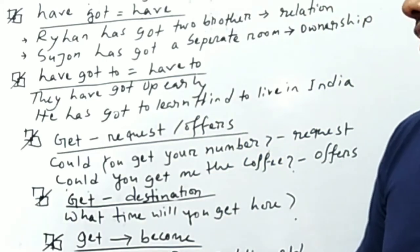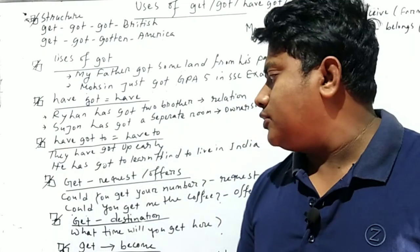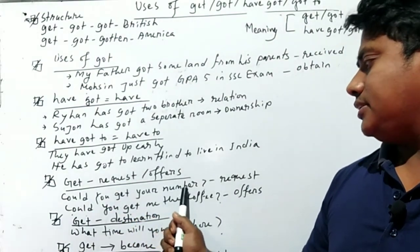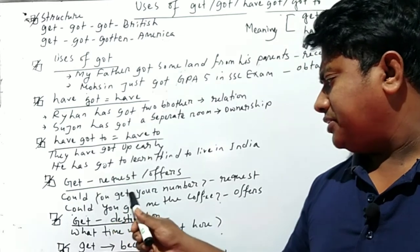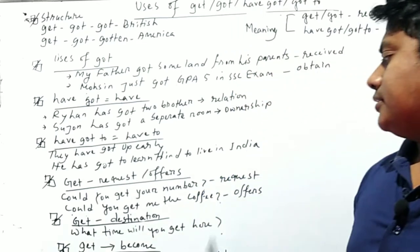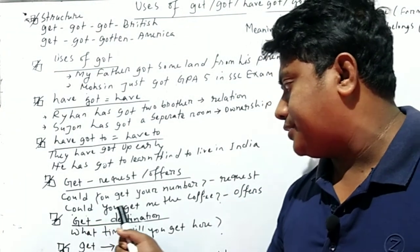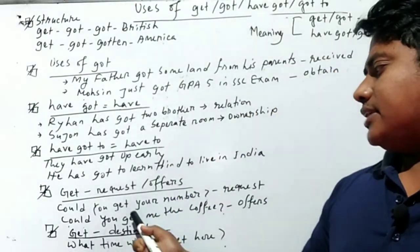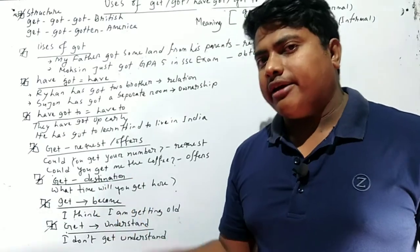Another use of got: get means request or offer. Here's the example: Could you get your number? What does the sentence express? It expresses a request. Get means request for giving number. Second example: Could you get me the coffee?